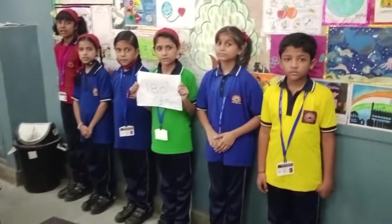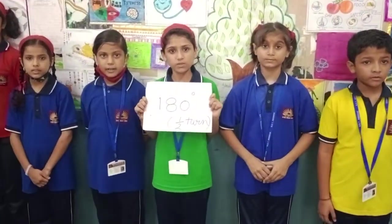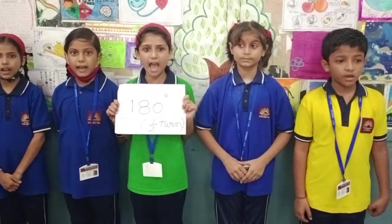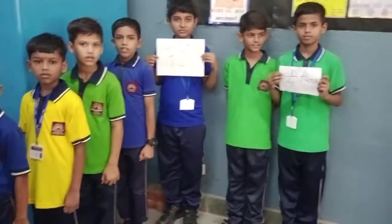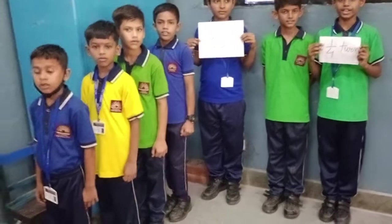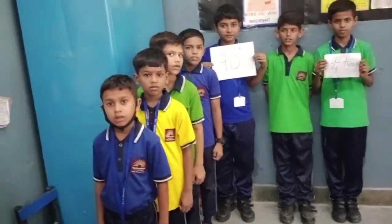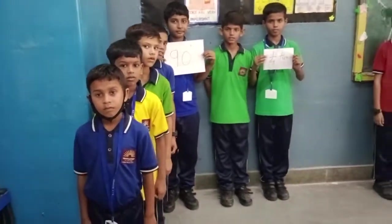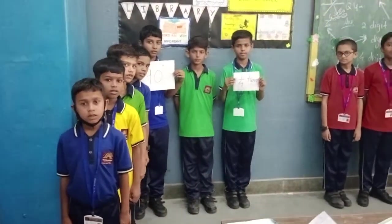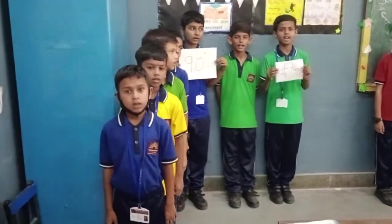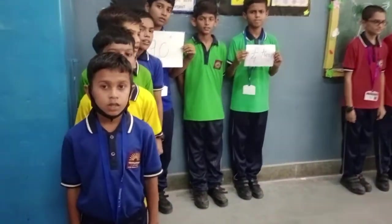This one is 180 degree. 180 degree means straight line — straight line angle. This is 90 degree. 90 degree means kaunsi shape banti hai? Kaunsi shape dikha rhi hai? 90 degree — alphabet ki kaunsi shape ho gyi hai? L. Very good.